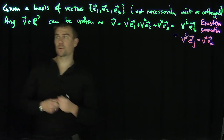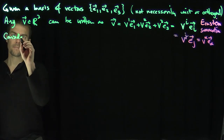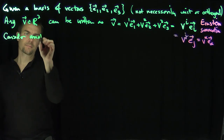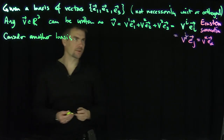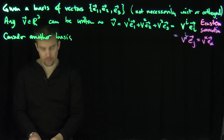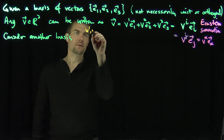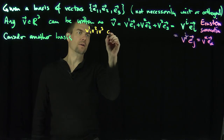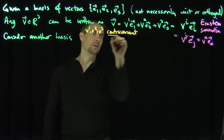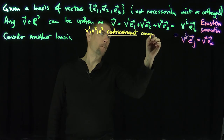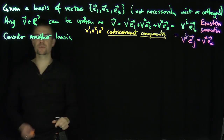At this point I should mention that these coefficients v1 through v3 are called the contravariant components — v1, v2, v3 are the upper index components. Contravariant means upper index.